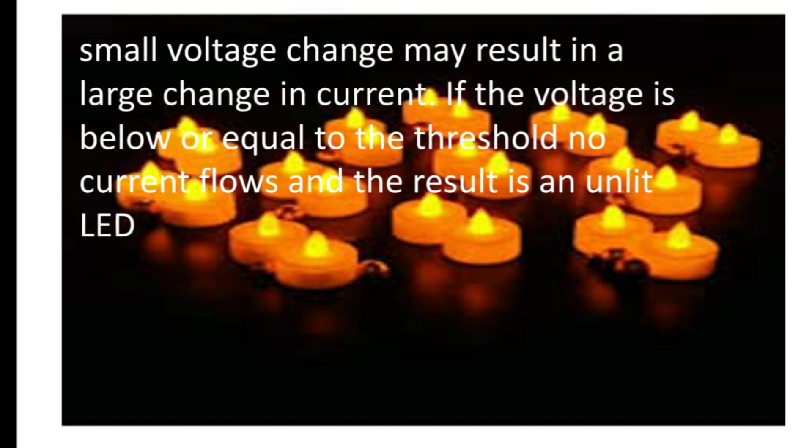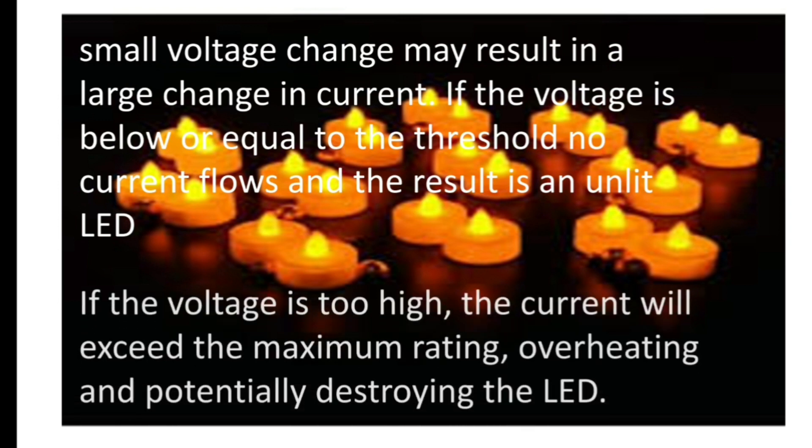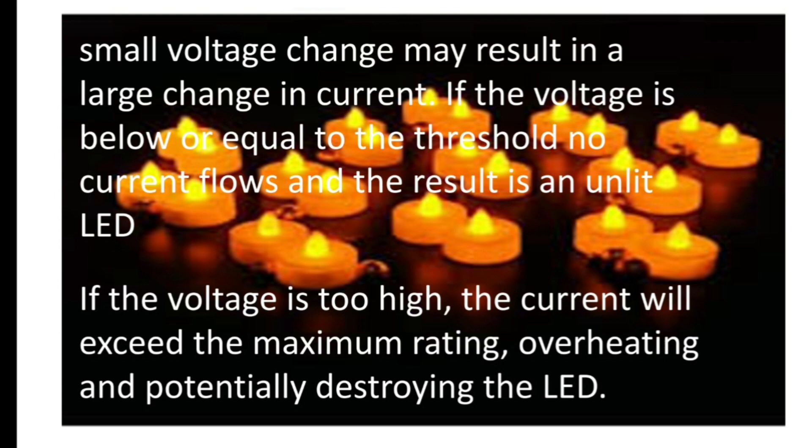Small voltage change may result in a large change in current. If the voltage is below or equal to the threshold, then no current flows and the result is an unlit LED. Threshold voltage for an LED is 0.7 volt in general. If the voltage is too high, the current will exceed the maximum rating that results in overheating and potentially destroying the LED.